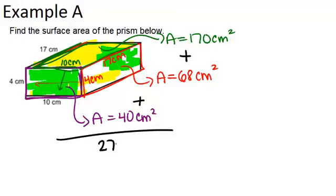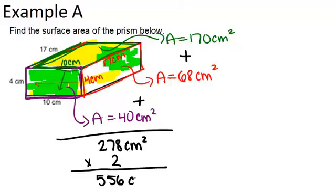And then we'll multiply that by 2, because each of them had a partner, to get our answer of 556 centimeters squared. So it would take 556 little unit centimeter squares to cover that whole solid.